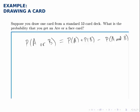Here the probability that you get an ace or a face card, well an ace is not a face card so these events are mutually exclusive or disjoint, they won't happen at the same time. If we're only drawing one card we're either going to get an ace or a face card or something else, but we're not going to get something that's both an ace and a face card.